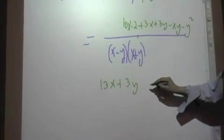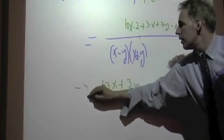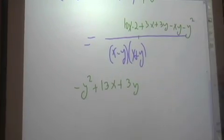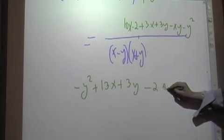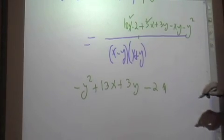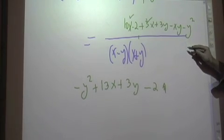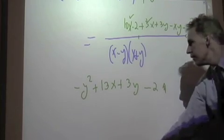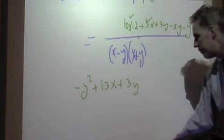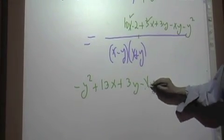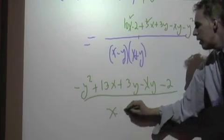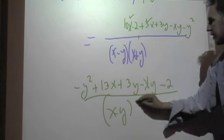Plus 2y. Minus y squared here, I guess. And minus 2 plus 3y. No, we did the 3y. We've got that and that together. Minus 2, we took care of 3y. Minus xy. Yeah, we've got to take care of that. So that's minus xy minus 2 over x minus y, x plus y. That's our final answer.